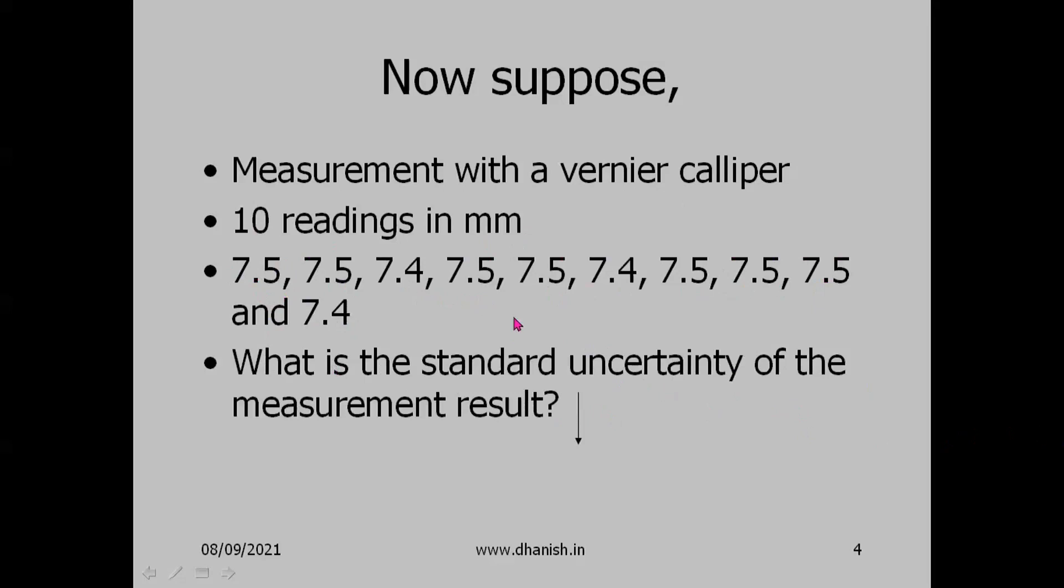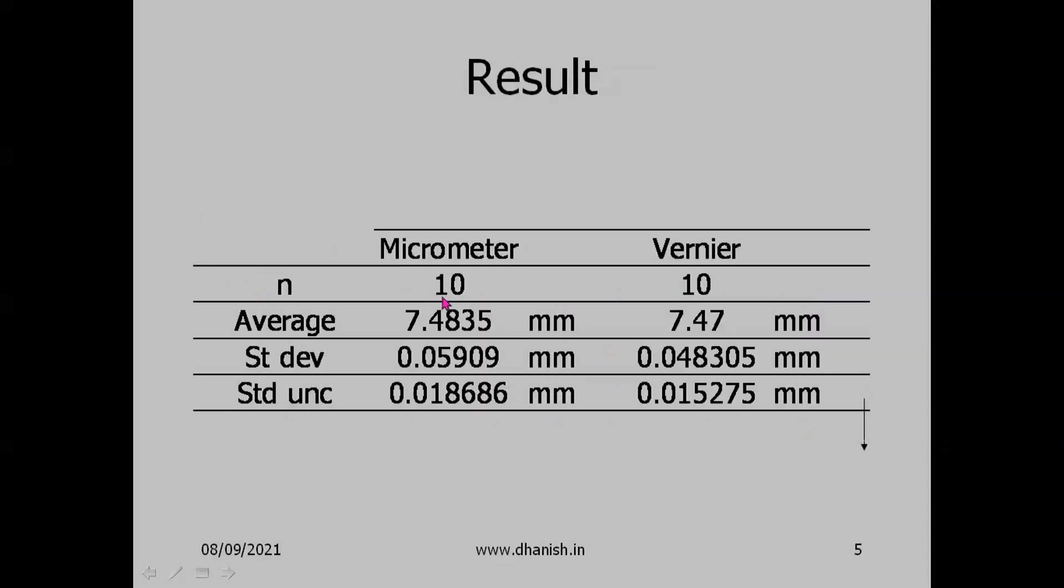Once again you can take standard deviation of all of this. For vernier, the average is 7.47mm, standard deviation is 0.048305mm, standard uncertainty is 0.015275mm.